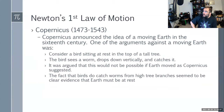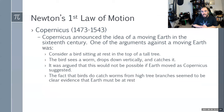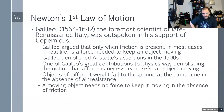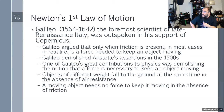In the 16th century, one argument against the moving earth was: consider a bird sitting at rest on top of a tree. The bird sees a worm, drops down vertically and catches it. It was argued this would not be possible if the earth was moving. The same arguments people make today in flat earth theories apply. The fact that birds do catch worms seemed clear evidence that the earth must be at rest.